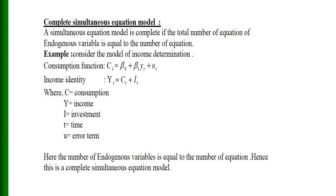Here the number of endogenous variables is equal to the number of equations. Hence, this is a complete simultaneous equation model. In this model, the endogenous variables are C_t and Y_t, and there are two equations. So this is a complete simultaneous equation model.